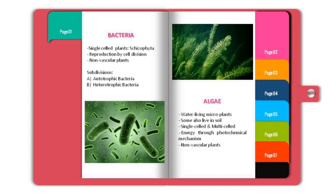Bacteria are also called schizophyta. They reproduce by cell division and they are non-vascular plants. Bacteria can further be divided into autotrophic bacteria and heterotrophic bacteria. Autotrophic bacteria produce their own food with the help of photosynthesis, while heterotrophic bacteria depend on dead organic matter for their food. They don't produce their own food.